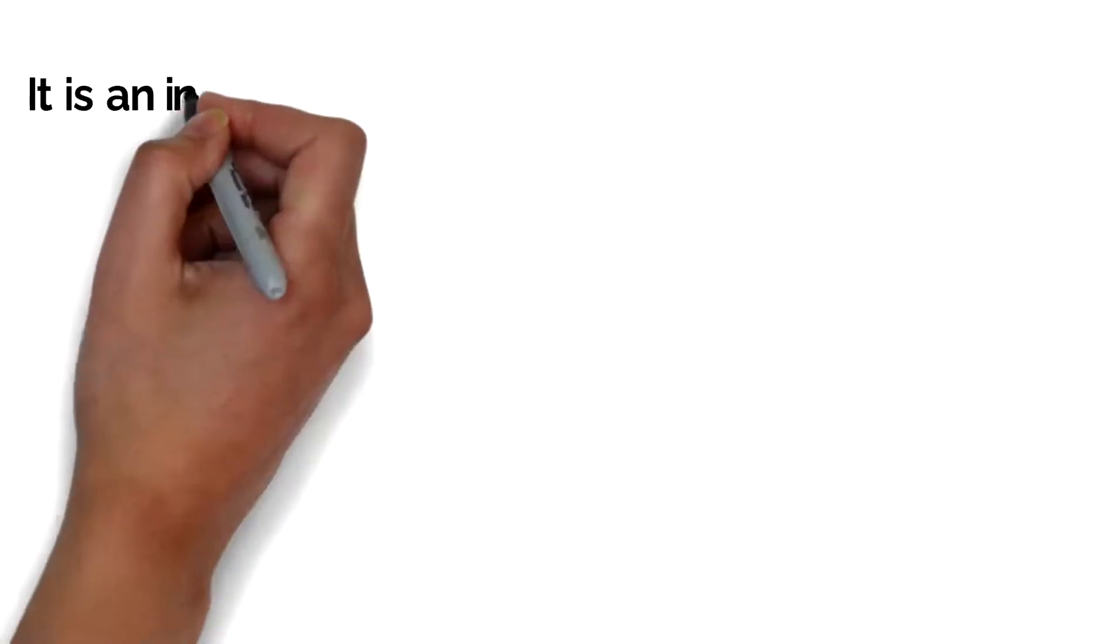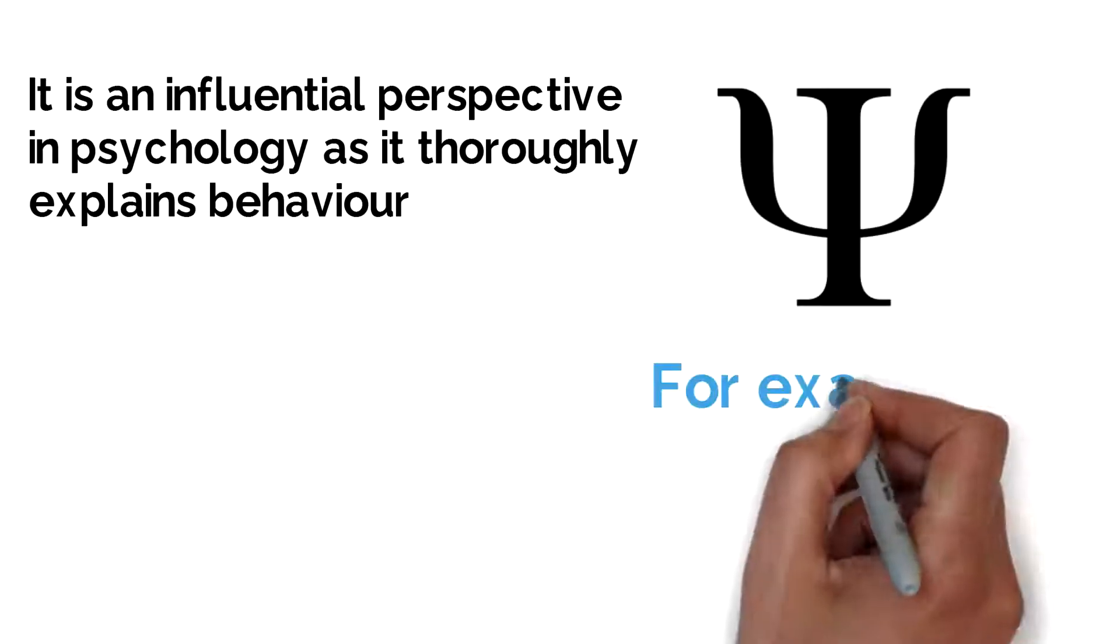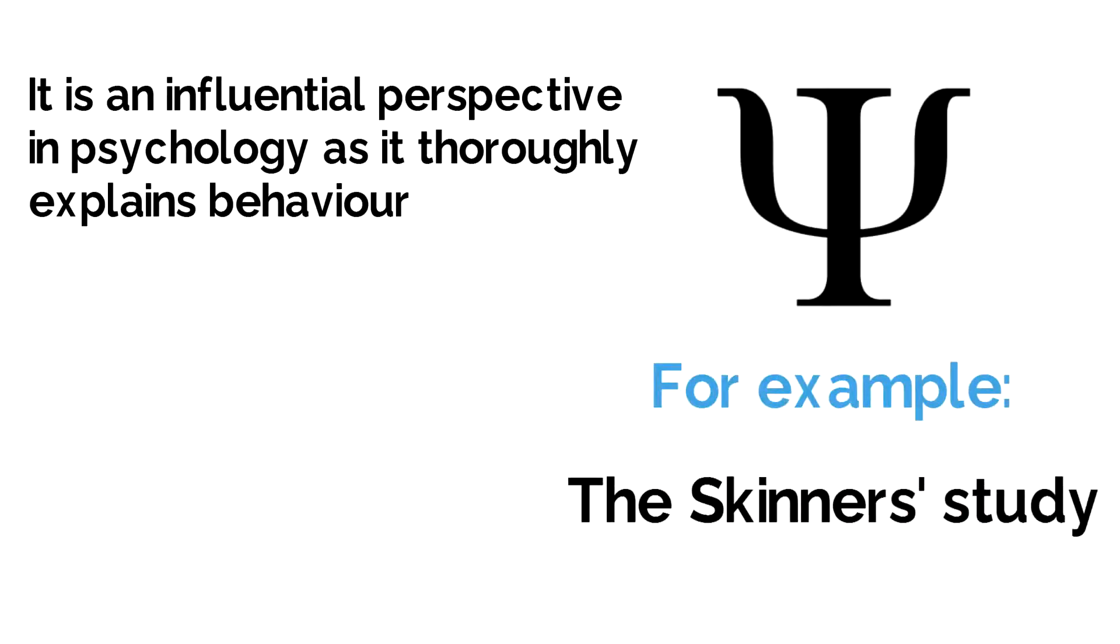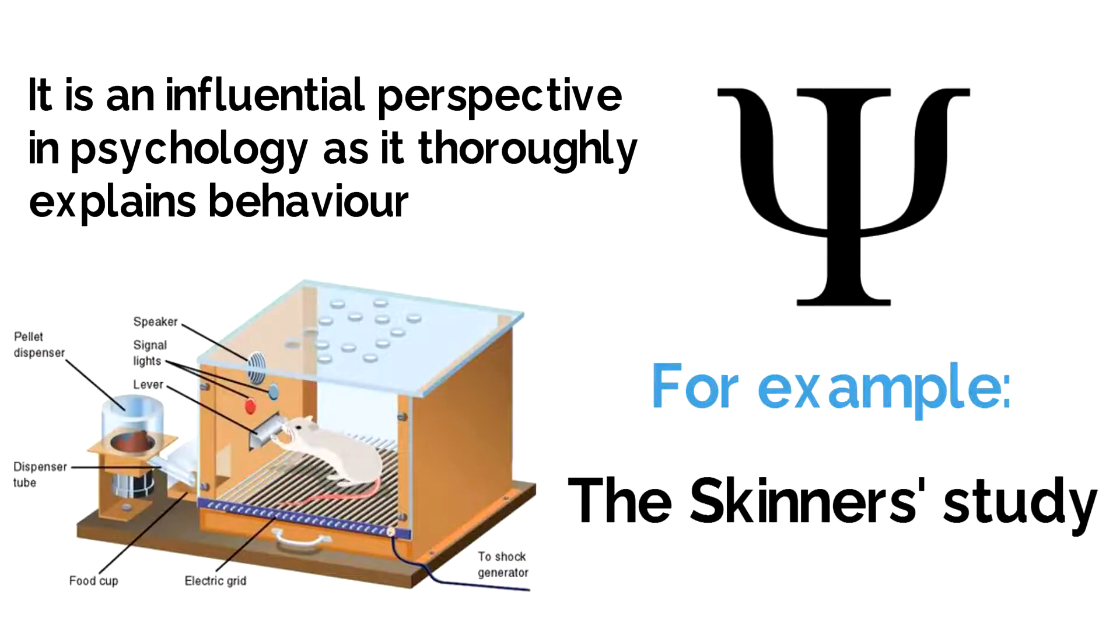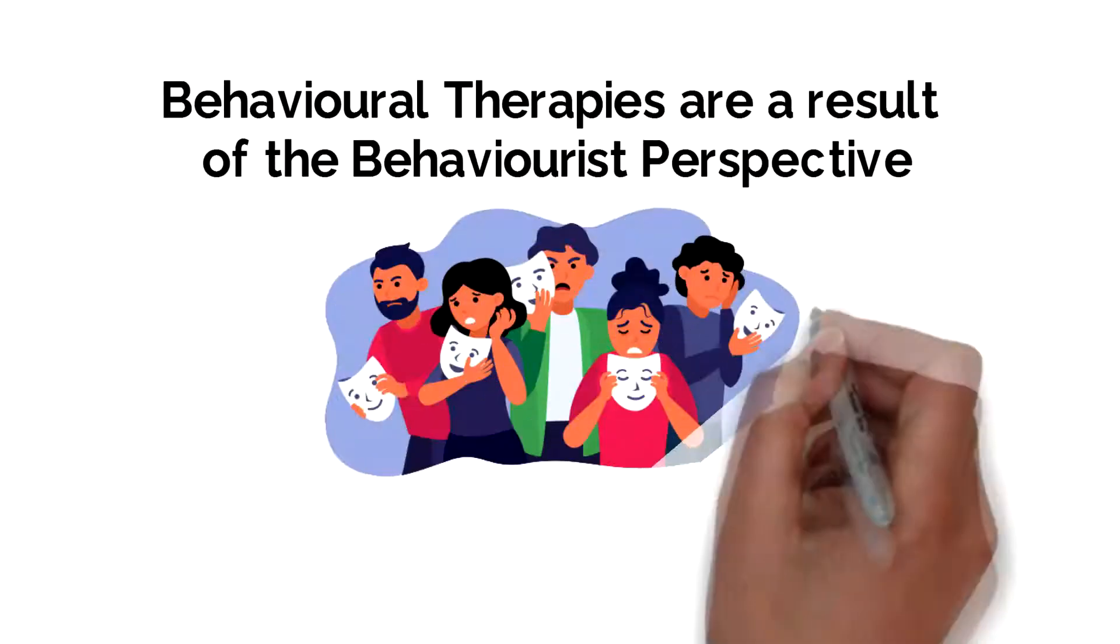It is a strong and highly influential perspective in psychology, as it thoroughly explains behaviour. For example, Skinner's study shows how rats can press a lever, reinforcement, and they will get food. Many therapies have also come out of it, such as behavioural therapies, which has helped to get rid of certain human behaviours.